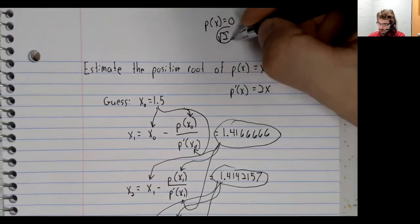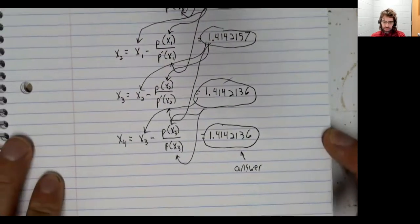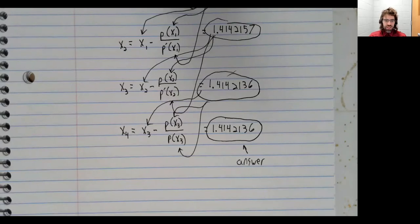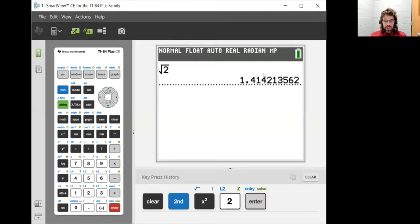We're looking for the square root of two. So is this close to the square root of two? The square root of two is 1.41421356. So we were accurate up to this decimal.